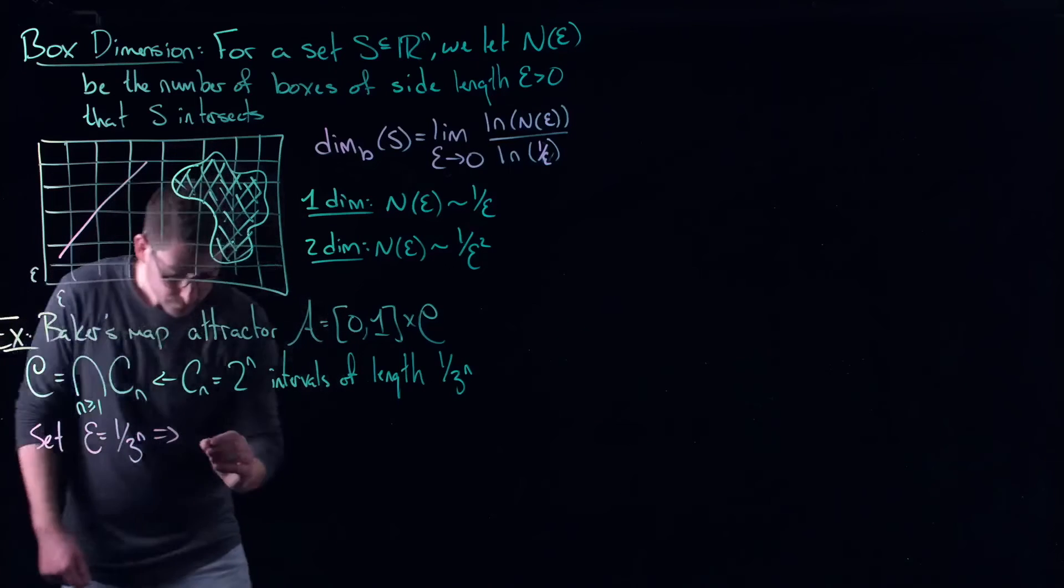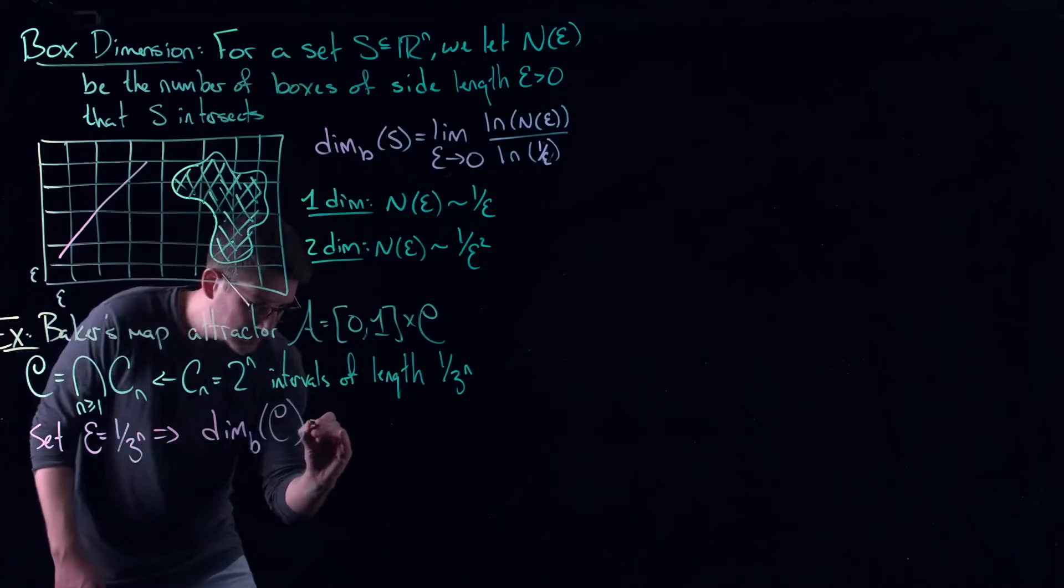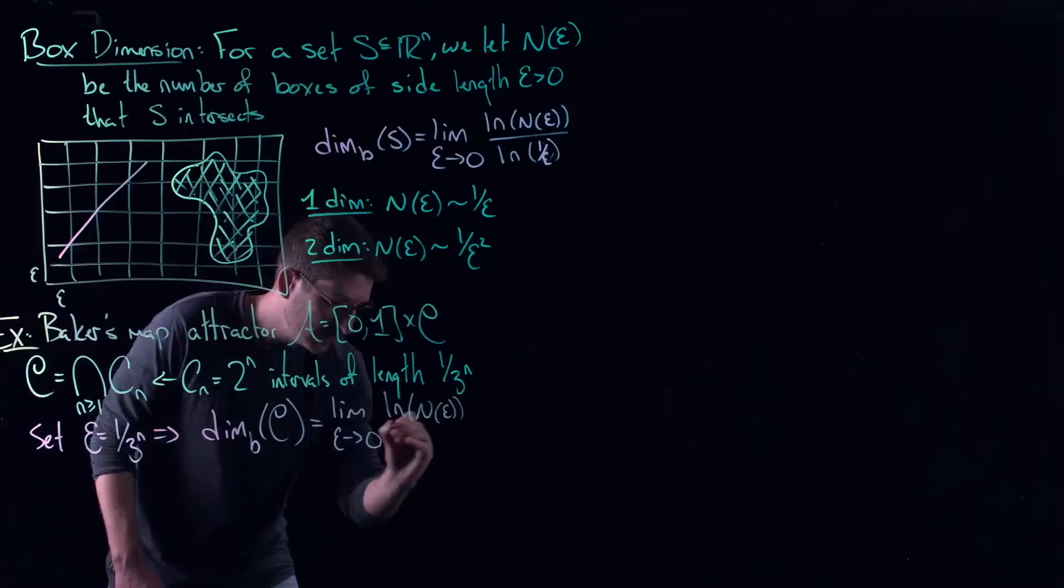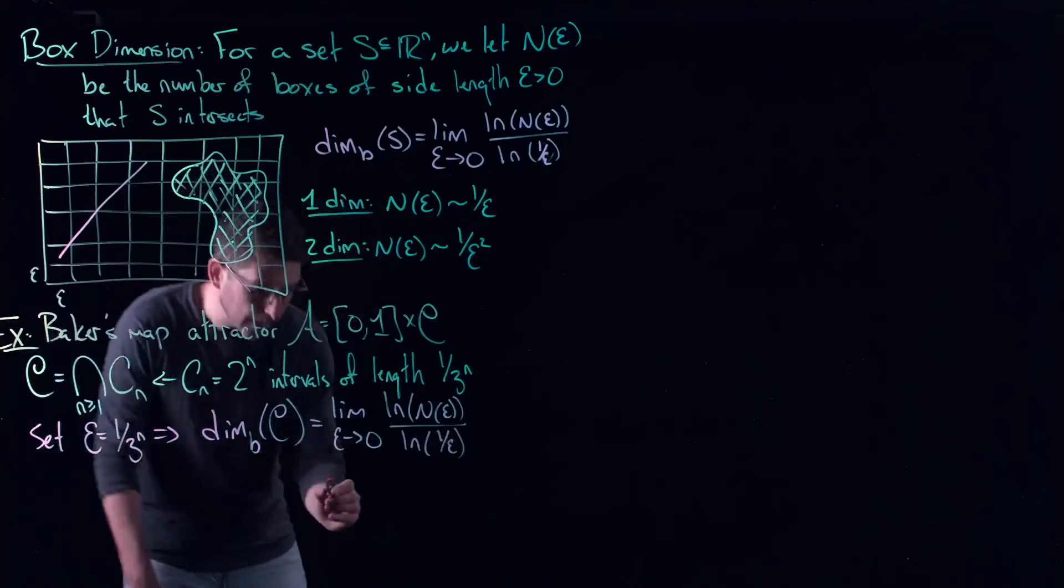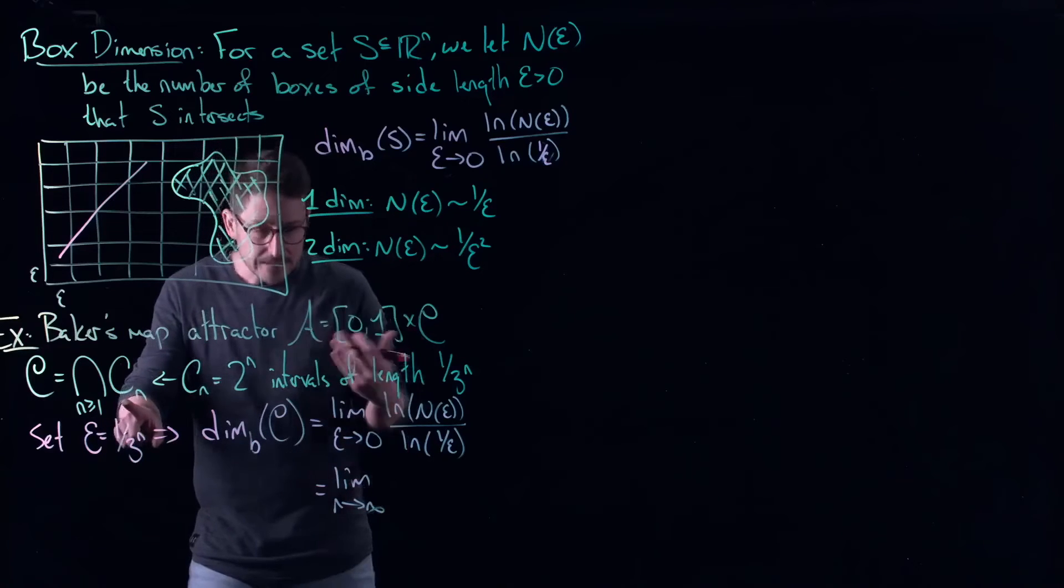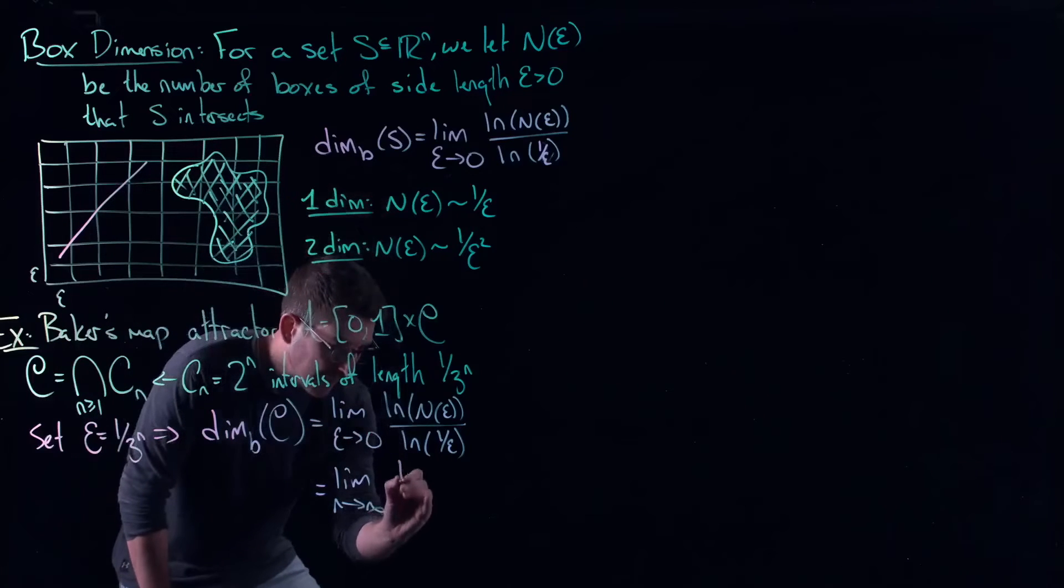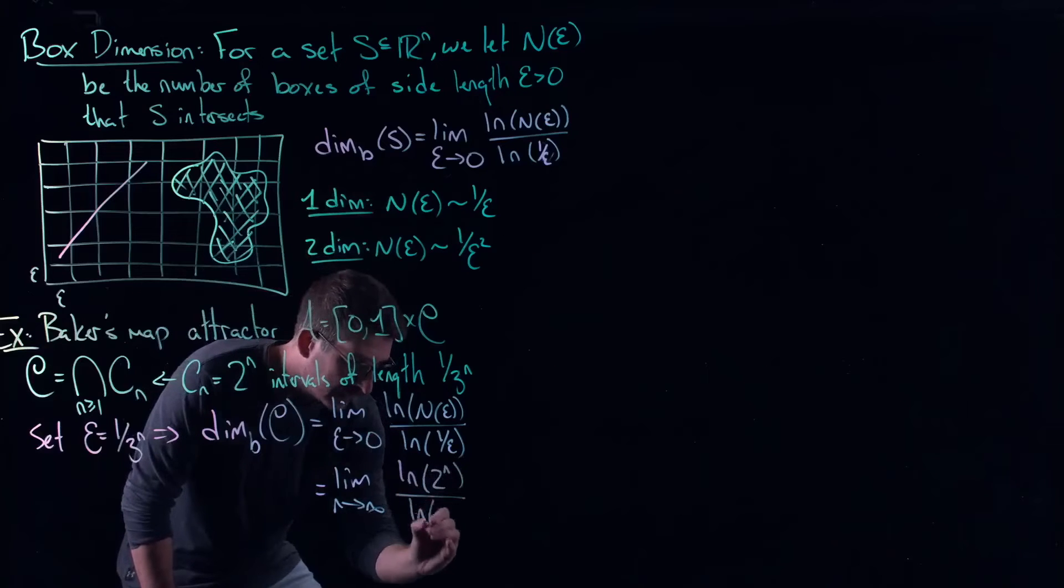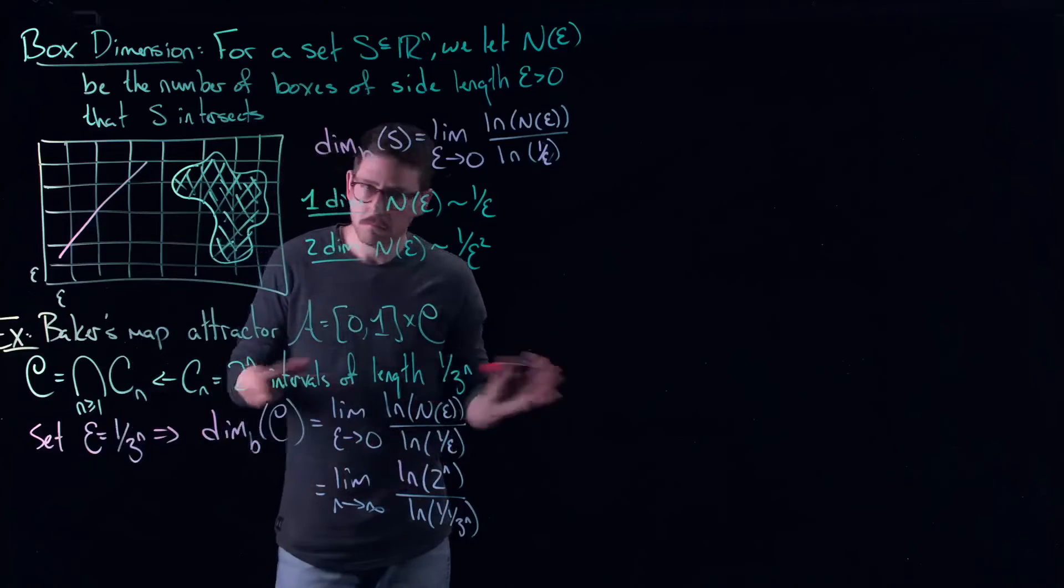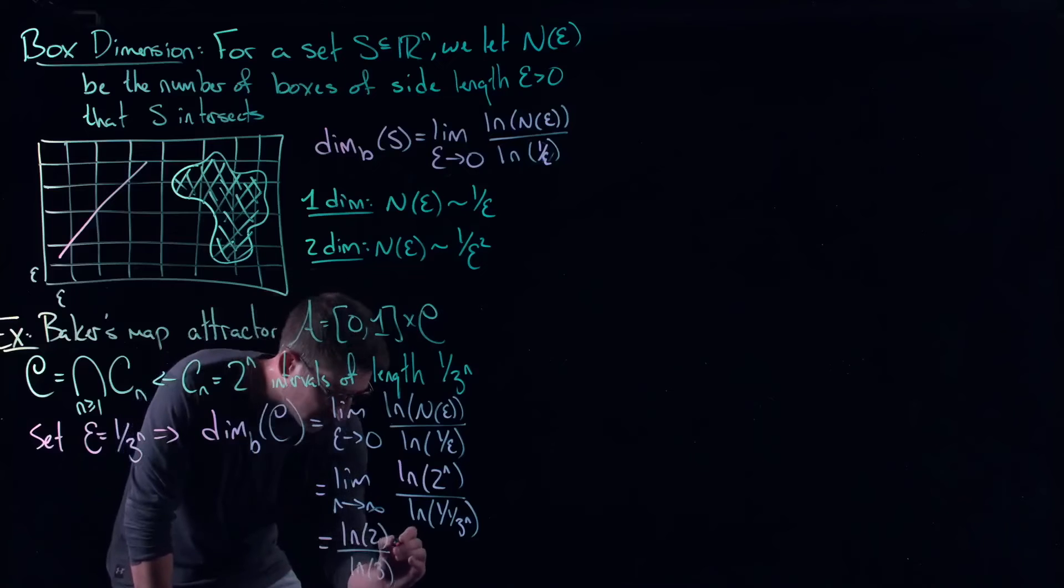So this tells me that my box counting dimension of C should be this limit. So again, as ε goes to zero of ln of N(ε) divided by ln of one over ε, which again, this is really sort of the limit as n goes to infinity. Now, you're sort of thinking about this C_n, the limit of these things. So with an ε of one over 3^n, I can cover all 2^n intervals here. So this gives me ln of 2^n divided by ln of one over one over 3^n. Remember, ε is one over 3^n, which, a little bit of fun manipulation with logarithms, but this gives you ln(2) divided by ln(3), which is something like 0.631.